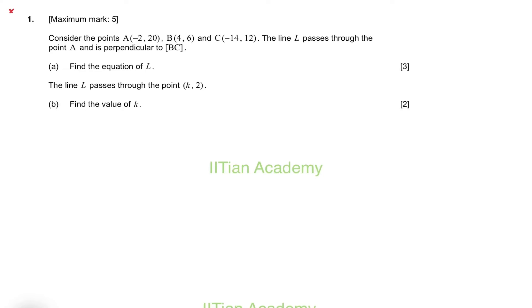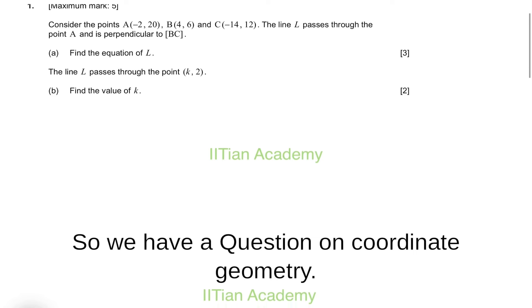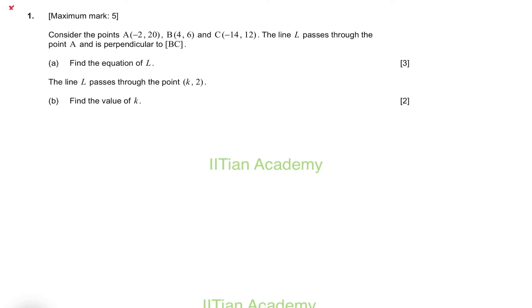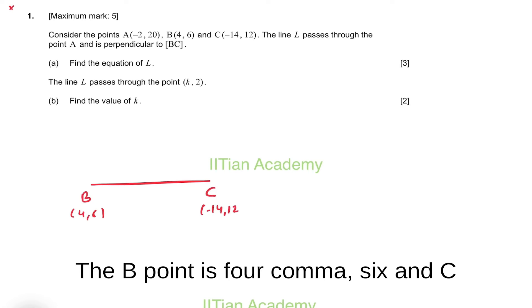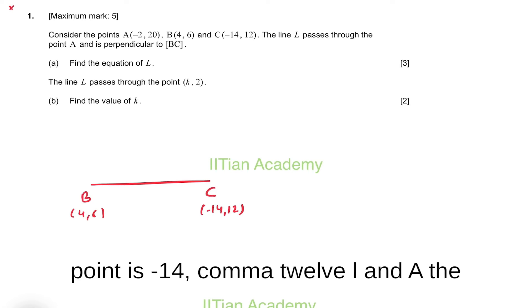Hello friends, we have a question on coordinate geometry. There are three points A, B, and C, and a line passes through point A which is perpendicular to BC line. Point B is (4, 6), point C is (-14, 12), and the line passing through A is perpendicular to BC. Point A is (-2, 20).